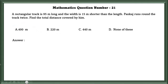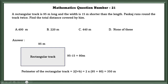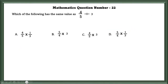Mathematics question number 21: A rectangular track is 95 meters long and the width is 15 meters shorter than the length. Pankaj runs around the track twice. Find the total distance covered by him. The perimeter of the rectangular track equals 2 into (L + B), which gives 350 meters. He ran twice, so 2 into 350 equals 700 meters. There is no such option, so the answer is D — none of these.